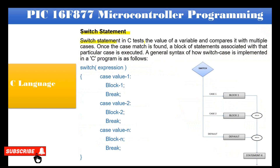The switch statement in C tests the value of a variable and compares it with multiple cases. Once a case match is found, a block of statements associated with that particular case is executed. The syntax includes: switch (expression), case value 1: block 1, break; case value 2: block 2, break; through case N, with a default case and default block of instruction. If any case is found, the specific block of instructions is executed and breaks from the switch statement.